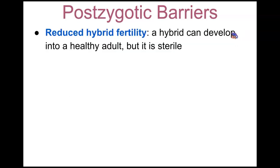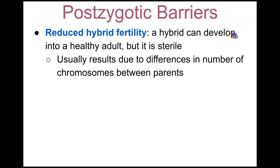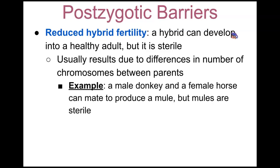In reduced hybrid fertility, a hybrid can develop into a healthy adult, but ultimately it will be sterile. This usually results from differences in chromosome number between the parents. An example: a male donkey and a female horse can mate to produce a mule, but mules are sterile — they are not able to reproduce and have fertile offspring.